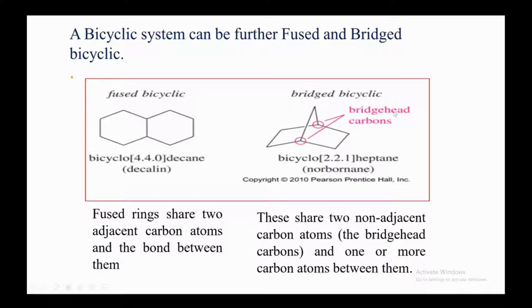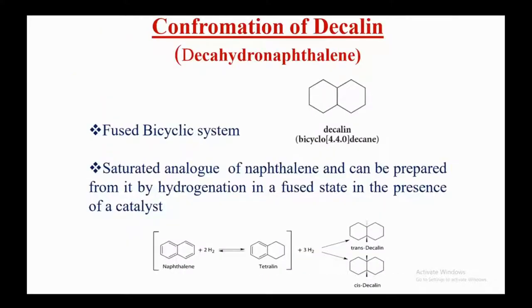In a bridged bicyclic compound, the bridgehead carbons — shown here in purple — are the shared carbon atoms. For example, bicyclo[2.2.1]heptane has fused rings sharing two adjacent carbon atoms and the bond between them, whereas bridged rings share two non-adjacent carbon atoms with one or more carbon atoms bridging between them.